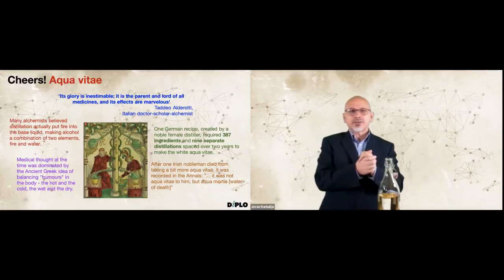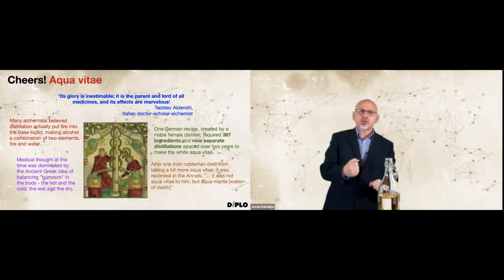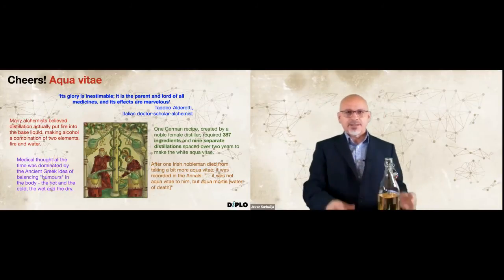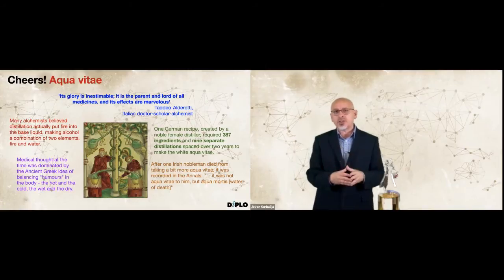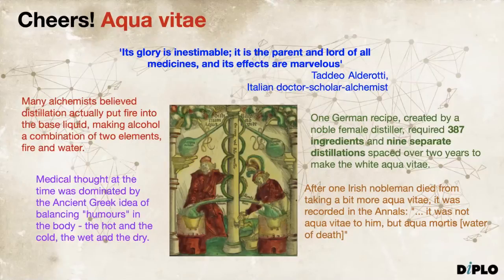It wasn't just the preservation quality that made distilled alcohol seem special. Whether you called it aqua vitae, aqua ardens (burning water), or aqua ignea (fiery water), it came from fire. Many alchemists believed distillation actually put fire into the base liquid, making alcohol a combination of two elements: fire and water. It appeared from a colorful liquid as a transparent vapor coiling through the tubes, like smoke — just as a spirit. This is probably the etymological origin of the word 'spirit.'